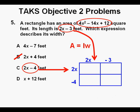Next, we'll try out answer C, a width of 2x minus 4. In the upper left cell, we put the product of 2x and 2x, which is 4x squared. And in the upper right cell, we place the product of negative 3 and 2x, which is negative 6x. In the lower left cell, we place the product of negative 4 and 2x, which is negative 8x. And in the lower right cell, we place the product of negative 4 and negative 3, which is positive 12.